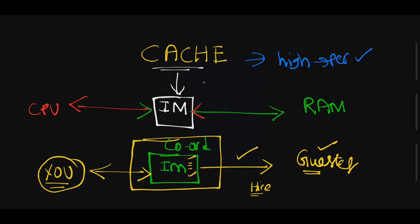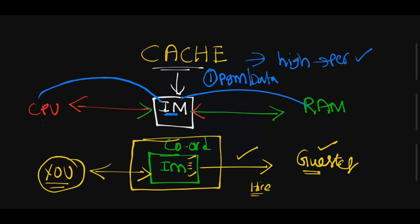First, this cache memory loads programs or data from the CPU into cache. If RAM is asking some job from the CPU, the first time the CPU loads data into cache, and then this data is taken by RAM. The second time RAM asks for the same data, there is no need to load it from the CPU — the data is taken directly from the cache. Cache is a faster and costlier temporary storage area used to improve the efficiency of the computer. Once data is stored in cache, it can be further used by other components like RAM.